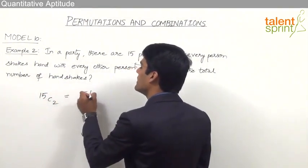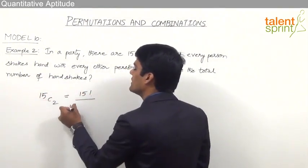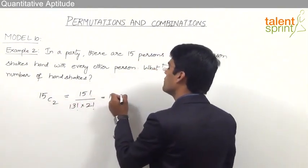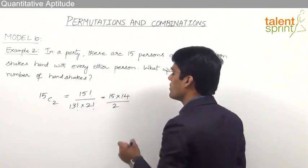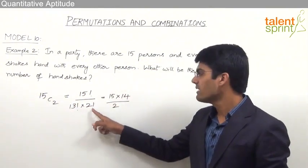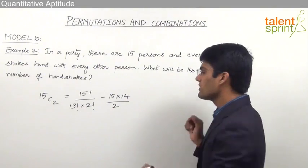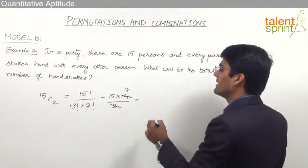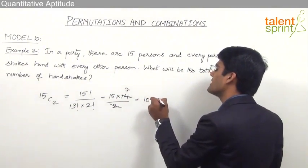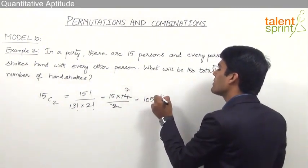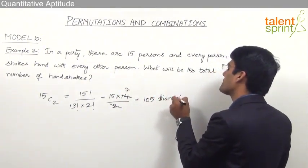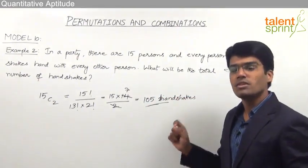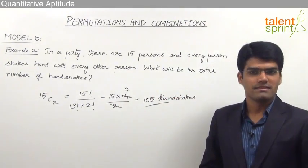The answer is 15C2 = 15! / (13! × 2!) = 15 × 14 / 2. The 13! cancels, and dividing by 2 gives 15 × 7 = 105. So there will be a total of 105 handshakes in the party. We simply find the number of ways two persons can be selected out of 15.